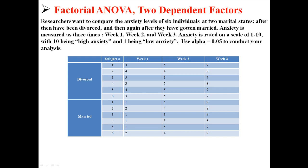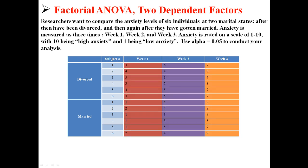Use alpha .05 to conduct your analysis — we're going to see if there are any differences anywhere. We have one dependent factor, which is week. We're measuring the same person at three different times: week one, week two, and week three, so there's going to be some consistent relationship between those three levels. We also have another dependent factor, which is divorced and married — we're measuring the same people just after they got divorced and then just after they got remarried, so there's also going to be some consistency between these two groups.